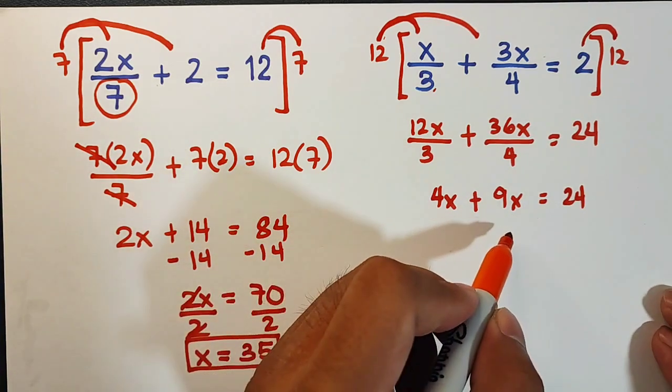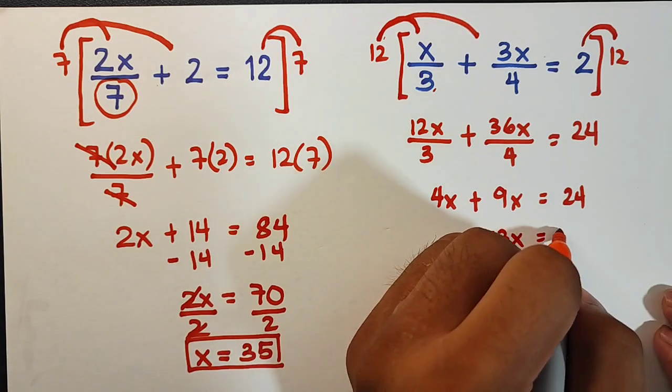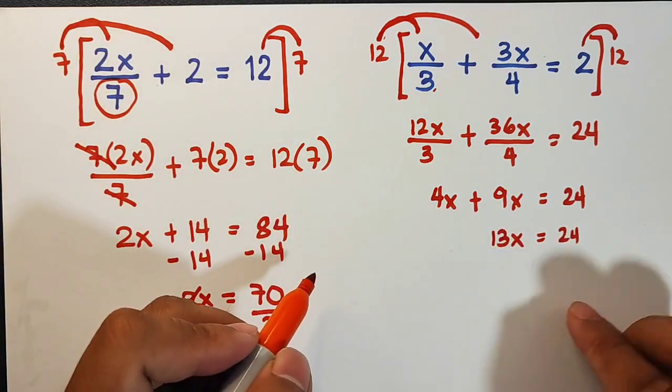4x plus 9x—4x plus 9x is 13x—then equal to 24.